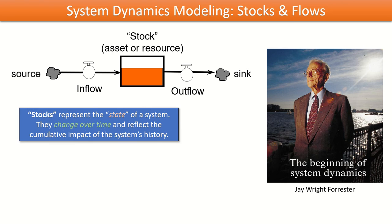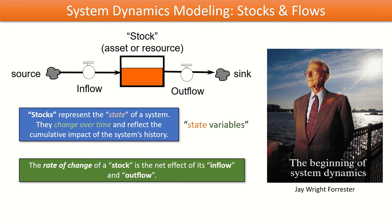Stocks are the state of a system — they change over time. When we think about systems dynamically changing over time, the things we keep track of that change from one instance to another are called stock variables, or state variables. The rate of change of a stock is what we call its flow — an inflow describes how the stock is increasing, an outflow describes how it's shrinking. The net flow into the stock determines how the level changes over time.